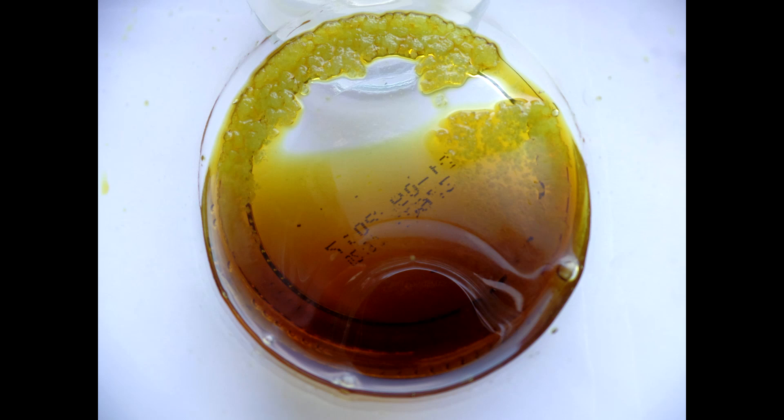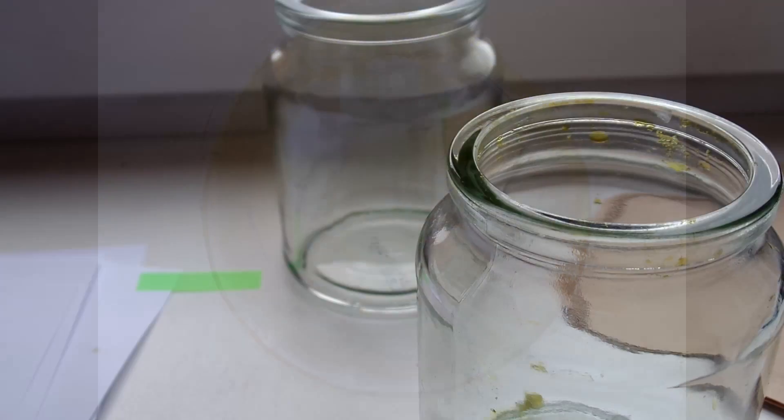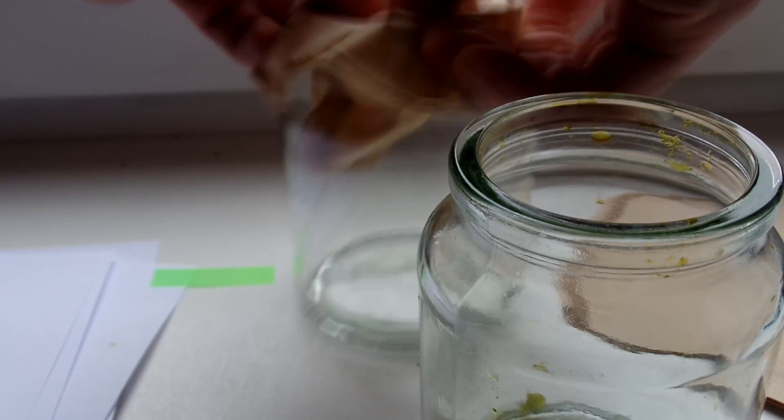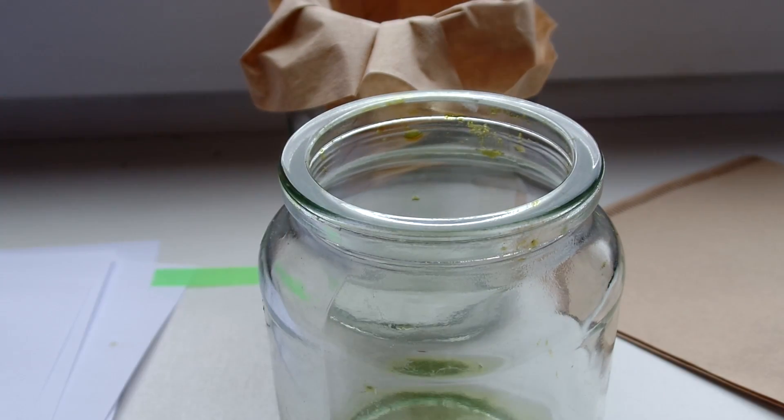The solution is cooled in the fridge for a day or two. These are the crystals of iron chloride. They are filtered off and washed with acetone, then dried.